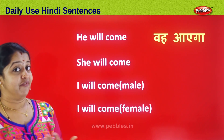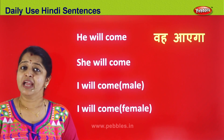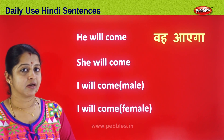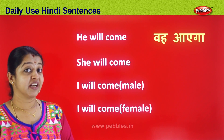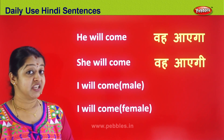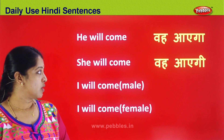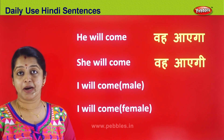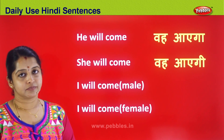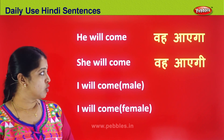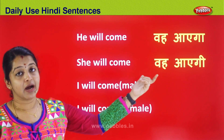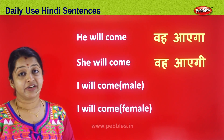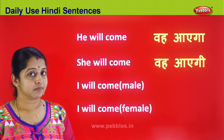Now for a girl: if asked whether Hema will come, you say Vah Ayegi. Hema Ayegi. Again notice the difference of GA and GI — if it is a male it becomes GA; if it is a female it becomes GI.